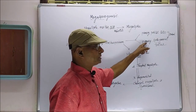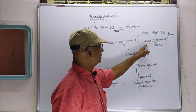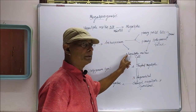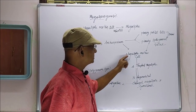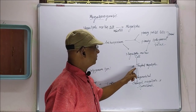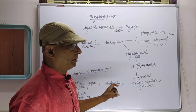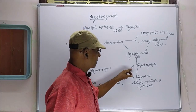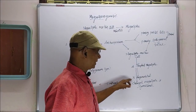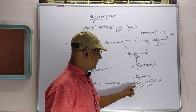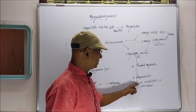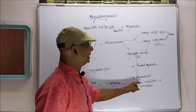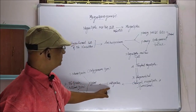The primary sporogenous tissue undergoes division and differentiates into the megaspore mother cell. The megaspore mother cell, by meiosis, produces four haploid megaspores arranged in a linear manner. Out of the four haploid megaspores, three will be degenerated. The fourth one, situated at the chalazal end, is the chalazal megaspore — the functional one — and that develops into the embryo sac.